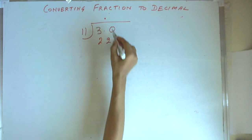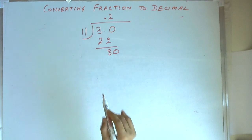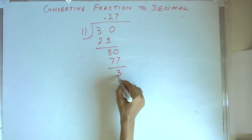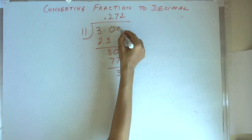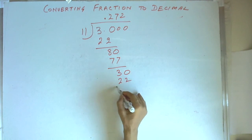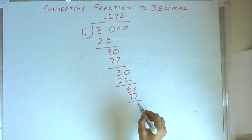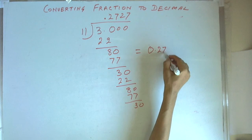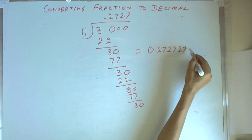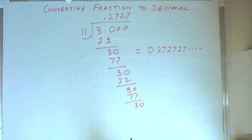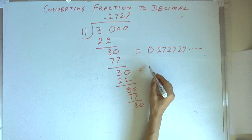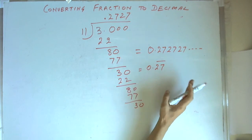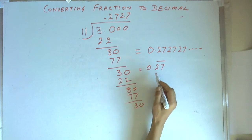30 divided by 11 gives 2 with remainder 8, so we put 2 here. Then 80 divided by 11 gives 7, and 11 into 7 is 77, and then again we get remainder 3, like this. So this becomes 0.272727 and so on — this 27 will keep on repeating. This is a non-terminating fraction and the decimal is written with a bar over 27, giving 272727 endlessly.